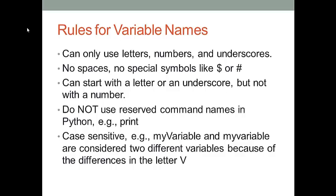First, a variable name can only contain letters, numbers, or underscores. We cannot have any spaces or special symbols like dollar sign or hashtag in a variable name. A variable name must start with a letter or an underscore, but we cannot use a number at the beginning of a variable name.